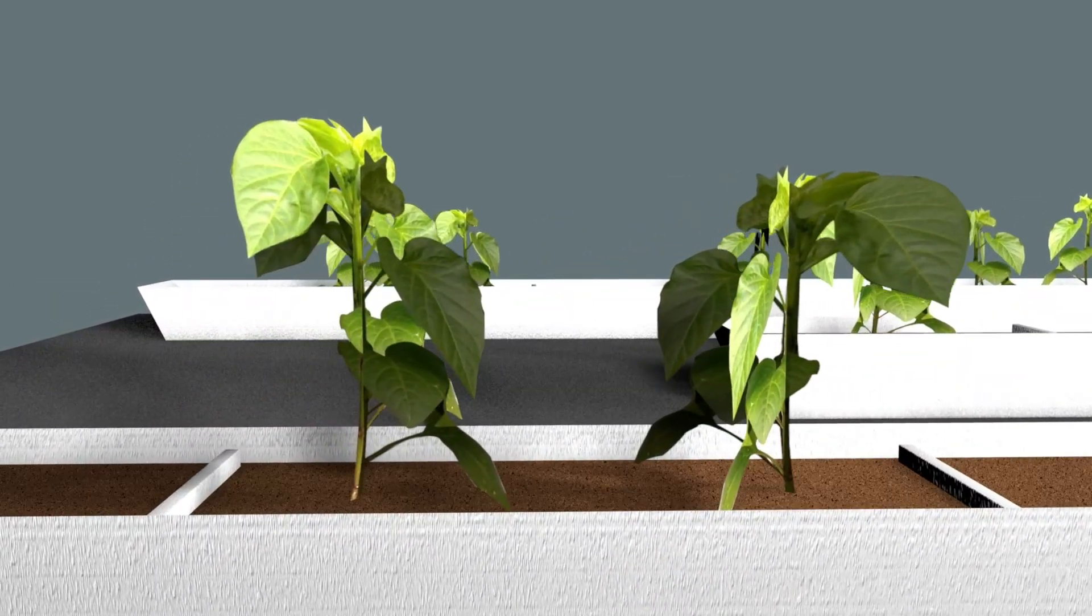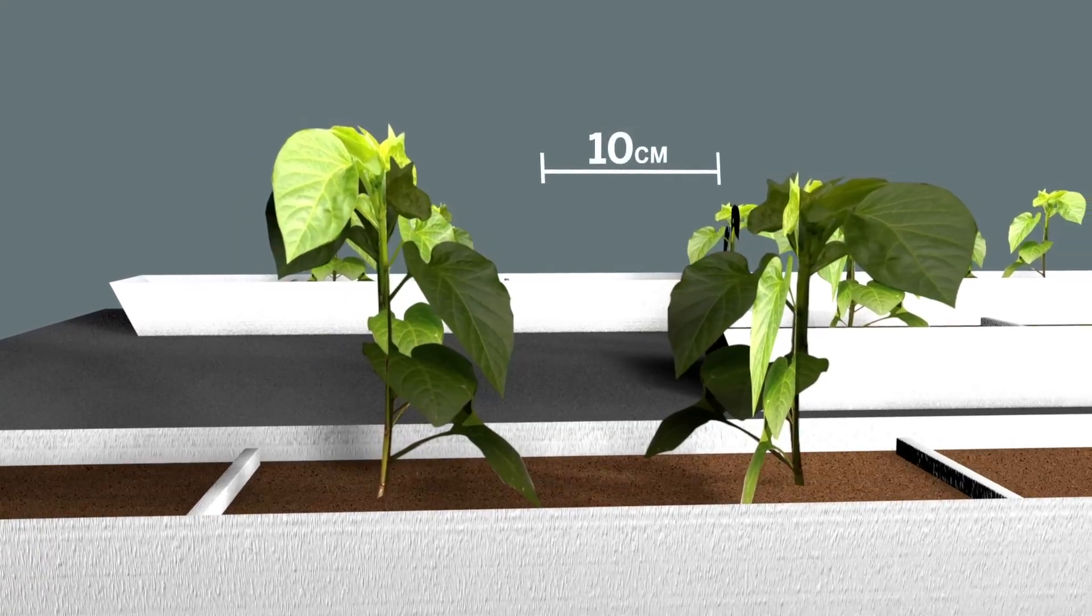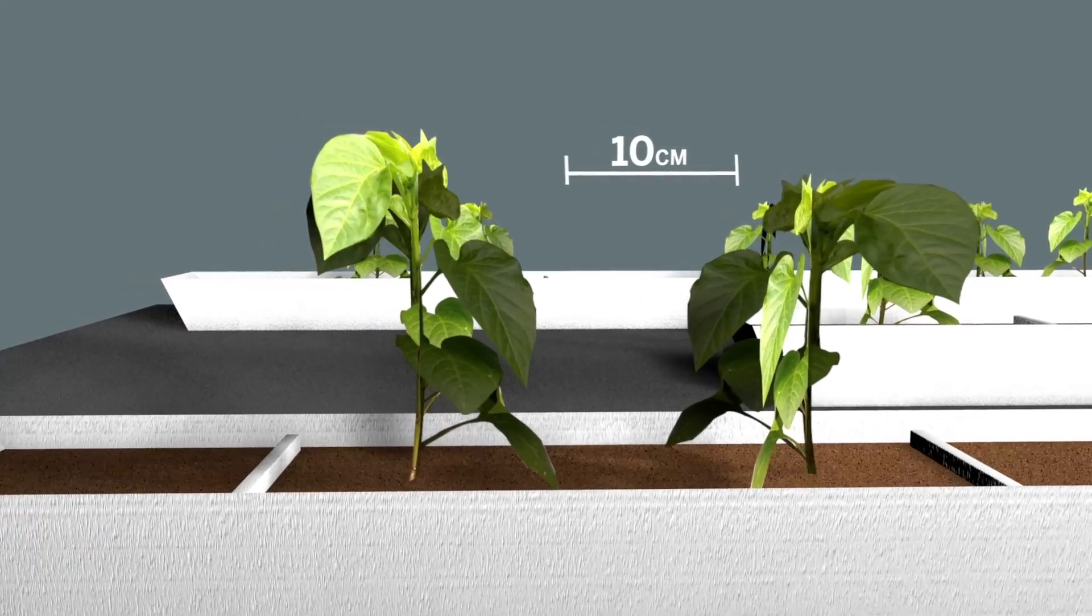In some gutters, they arranged pairs of pepper plants, roughly 10 cm apart. In others, solitary plants were grown without neighbors.